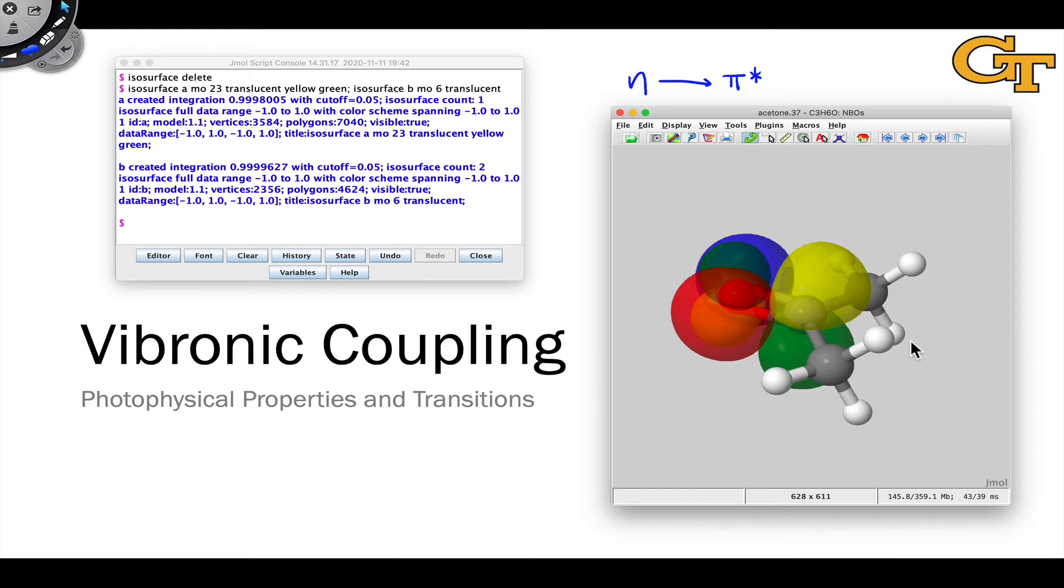And when they don't, we open up the door to transitions that are forbidden at zero order because we're changing the positions of the orbitals and the shapes of the orbitals as the nuclei change positions, and this can introduce overlap where there was none before. That's the essence of vibronic coupling.